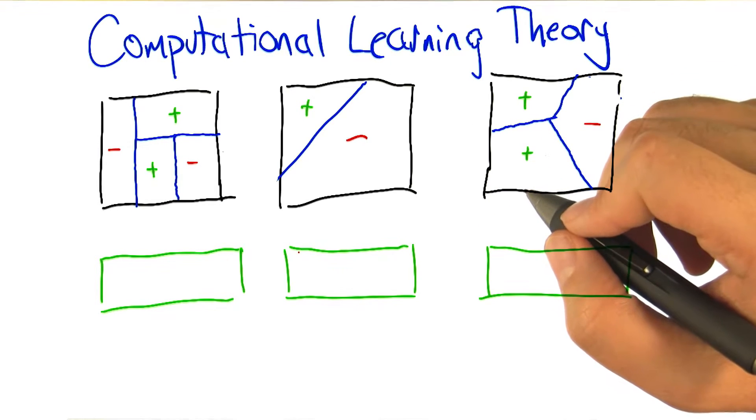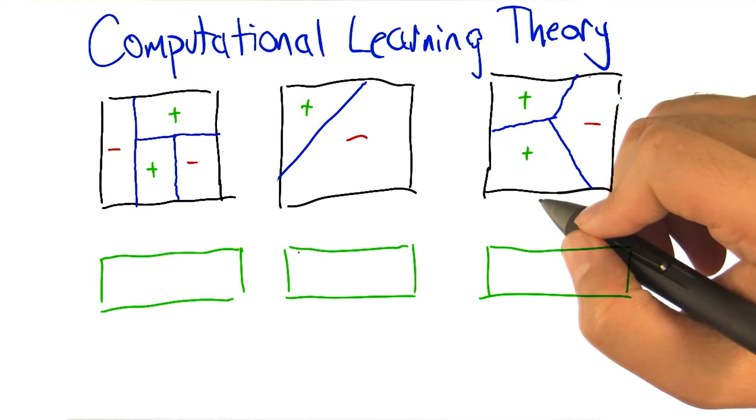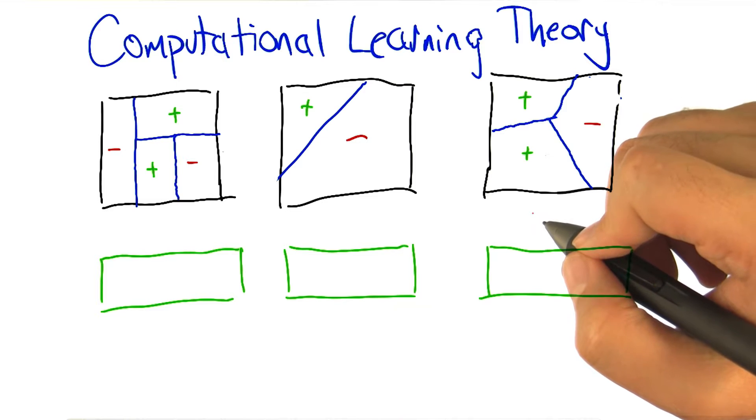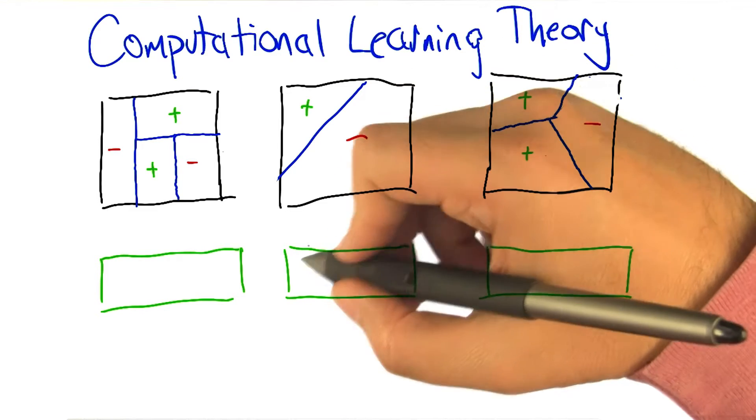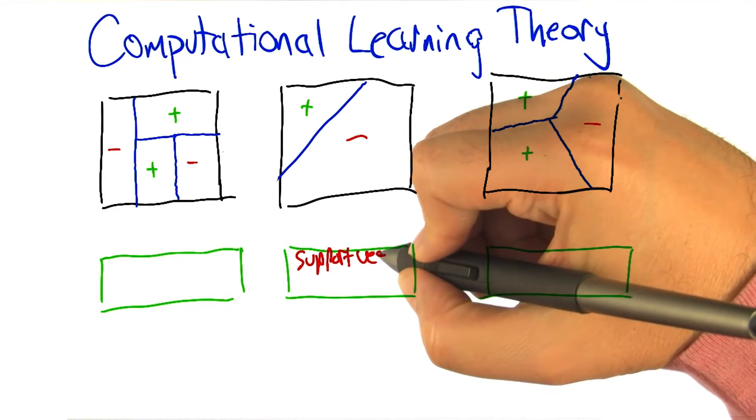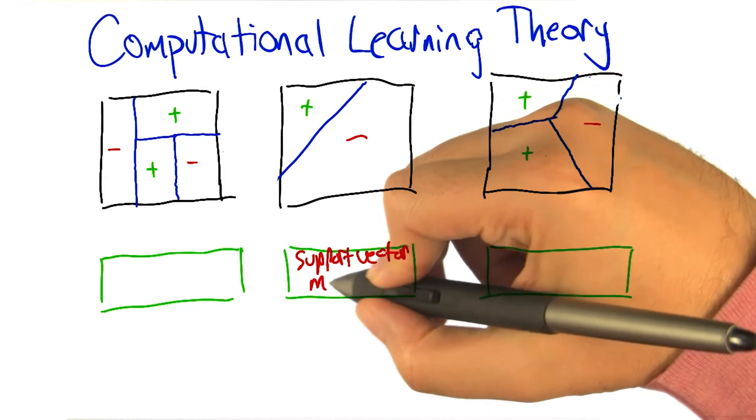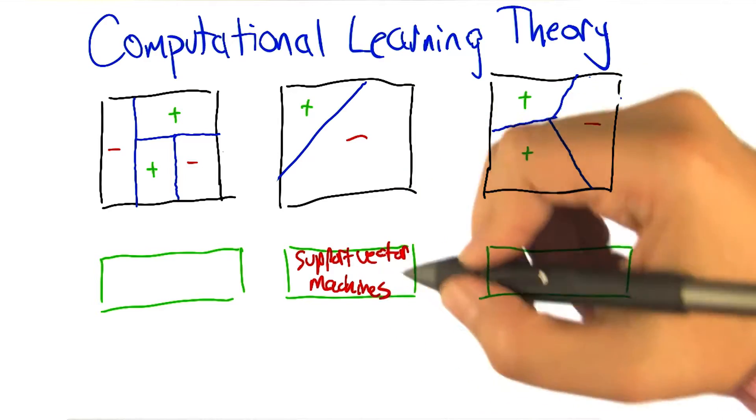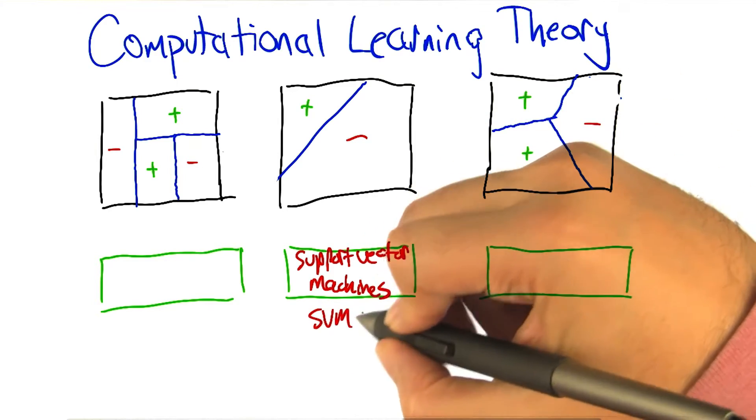All right Charles, welcome back. Let's see what you've come up with. Okay, so I would choose for the second one support vector machines. The reason why is because there seems to be a single line in the middle between where the plus and the minus are, so it looks like it's trying to maximize the margin.